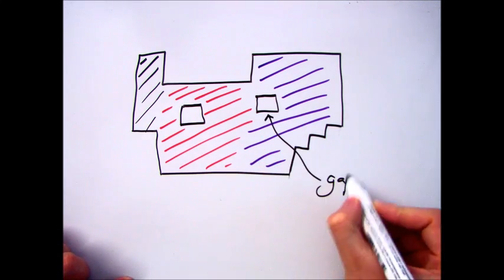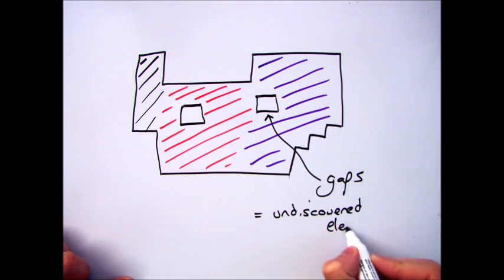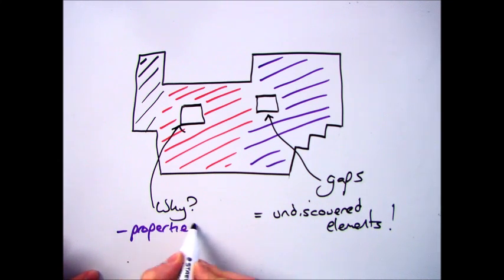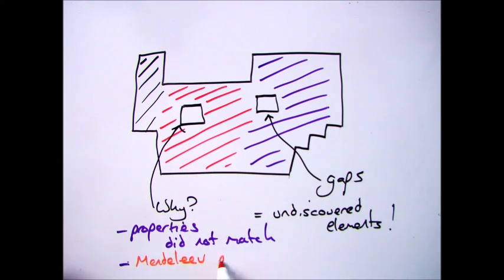So you should already know by now that Mendeleev put all the elements into groups based on their properties. But sometimes this wasn't the case, and if he had an element that didn't match with that group, he would move it along one to the group where it did and he would leave gaps, presuming that it was an undiscovered element.